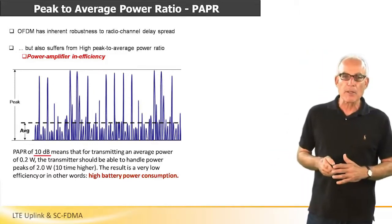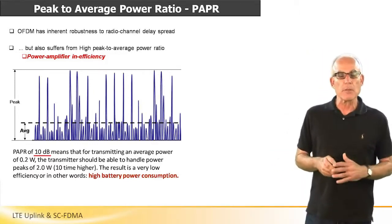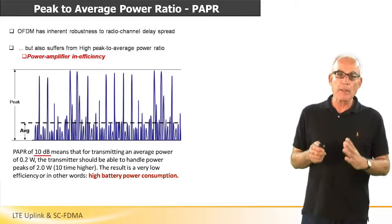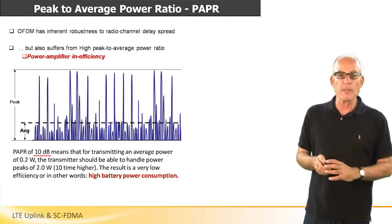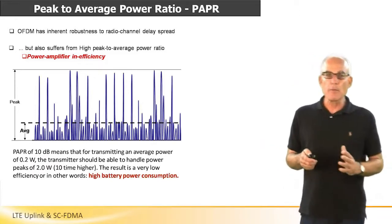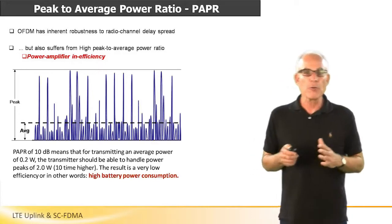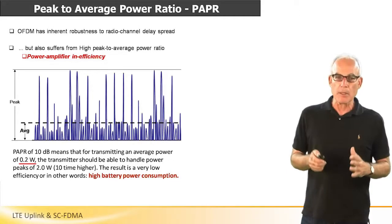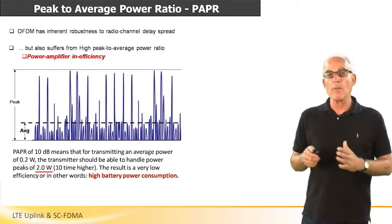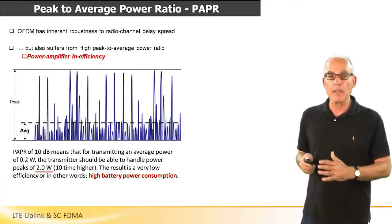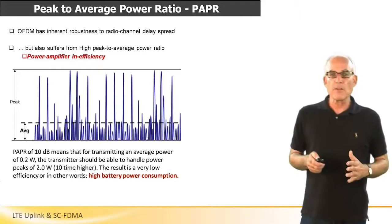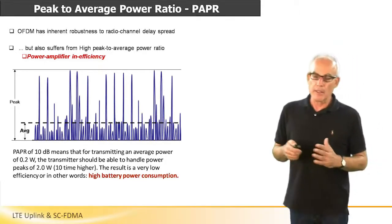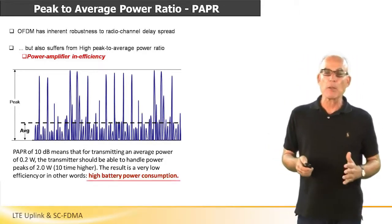The peak-to-average power ratio depends on the number of subcarriers used and on the modulation, but on average the probability to have a 10 dB peak-to-average ratio is relatively high. This means that in order to transmit an average of 200 mW, the power amplifier needs to be capable of handling peaks of about 2 W — 10 times higher, or 10 dB higher. In other words, the power amplifier will be significantly non-efficient, meaning high battery power consumption.